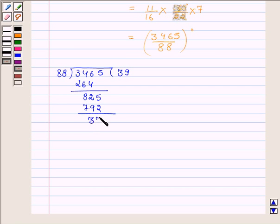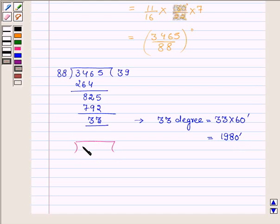Now this 33 is in degrees which is equal to 33 into 60 minutes, and on multiplying 33 with 60 we get 1980 minutes. Now let us divide 1980 by 88.